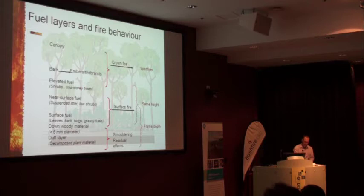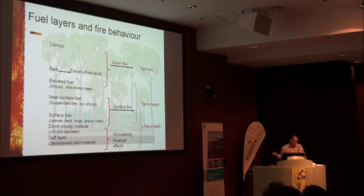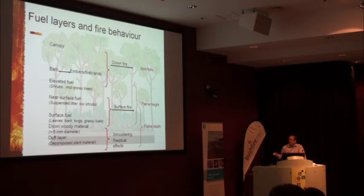If we look at the canopy layer, things like the crown base height and the depth of the green canopy layer are very important from a crowning point of view. Crown density and crown cover can be important in determining whether a vegetation type is actually going to be able to support a crown fire.